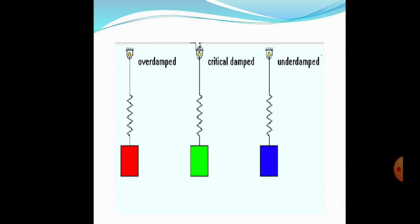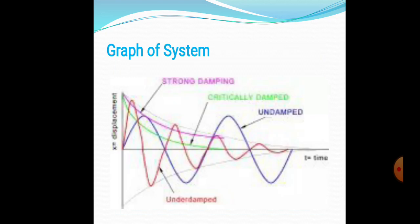Now look at the graph showing over-damped, critically damped, and under-damped conditions. The x-axis represents time and the y-axis represents the displacement from the equilibrium position. Strong damping shows rapid decay of amplitude. The blue line shows undamped vibrations — amplitude remains nearly constant throughout. The green line shows the critically damped case where amplitude starts at a maximum and comes to rest after some time interval.